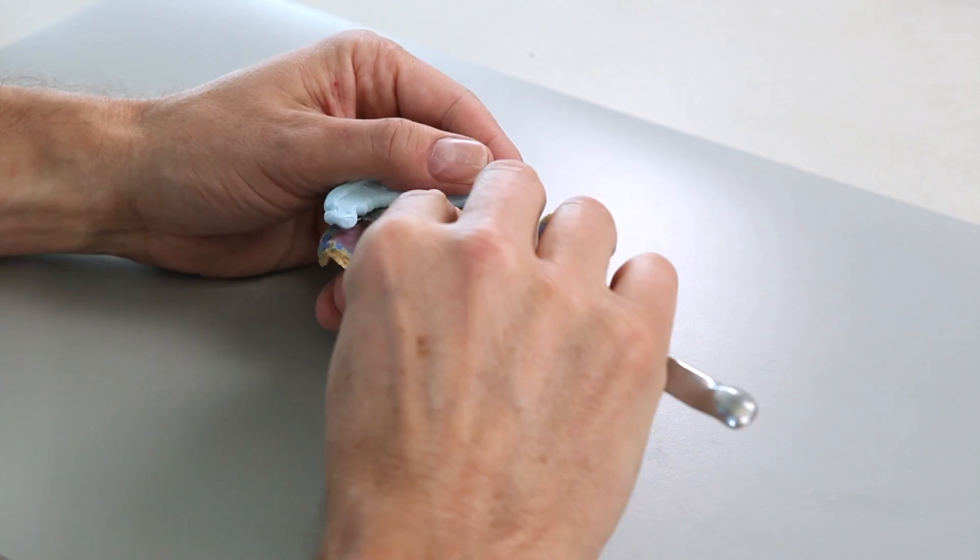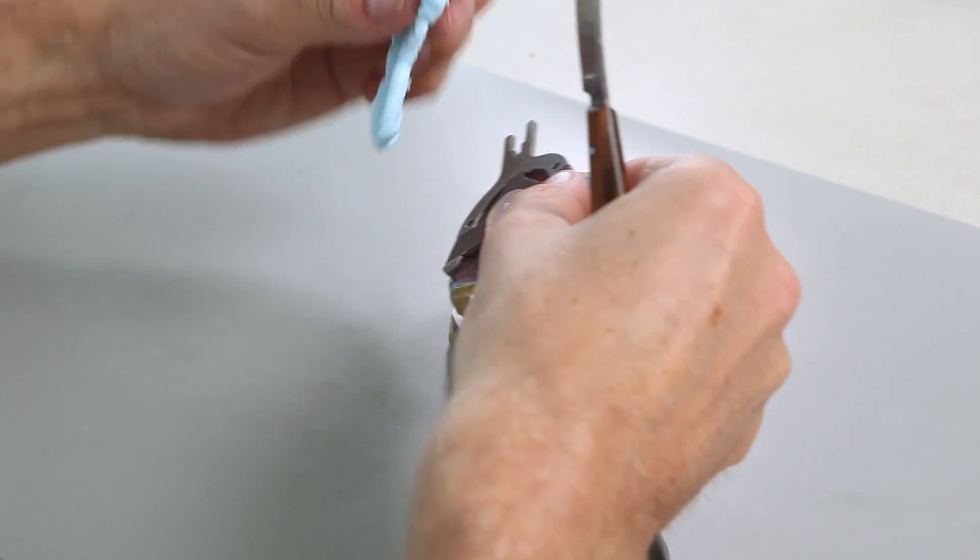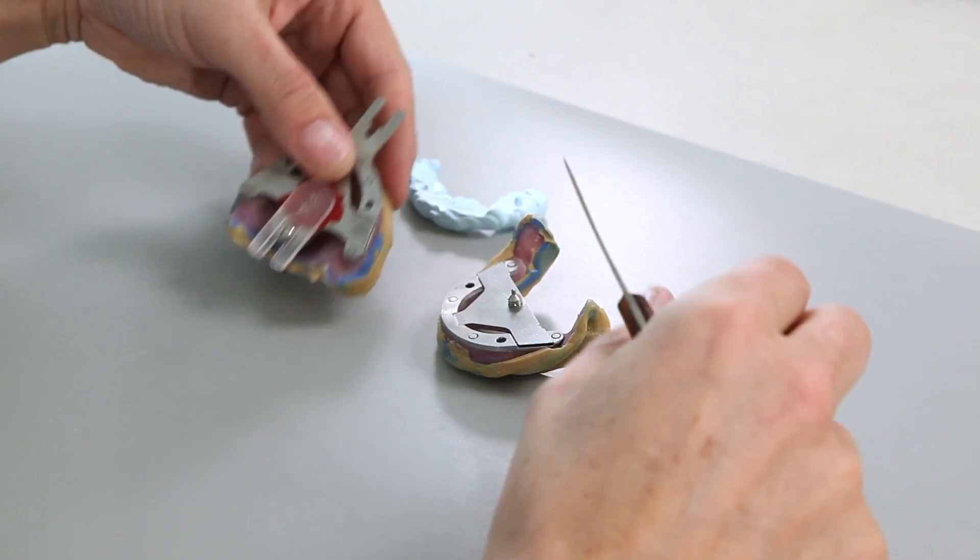After that, carefully separate the functional impressions and carefully remove the support pin registration plate.